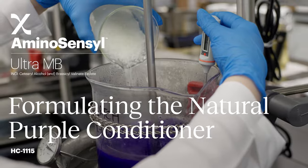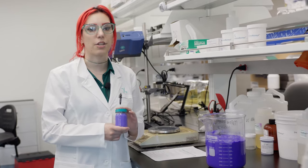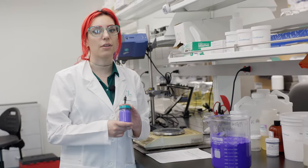Today, we'll be making the natural purple conditioner. Here, we're using Aminosensil Ultra MV as the main conditioning agent, which will help strengthen dry, damaged hair and create a healthy, smooth look.